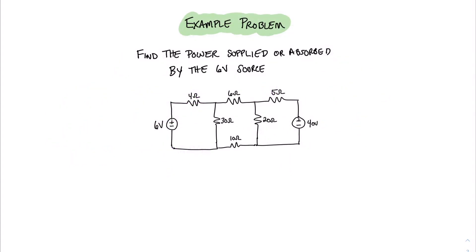Now let's practice our knowledge of source transformations on an example problem. We're asked for the power supplied or absorbed by this 6-volt source on the left of the circuit. Looking at this circuit, there's no simple way to do any resistive simplifications because there are no obvious parallel or series resistances. However, we can recognize that starting on the right, we can do a source transformation taking this 40-volt source into a current source with a parallel resistance, which will put that resistance in parallel with this 20-ohm resistor.